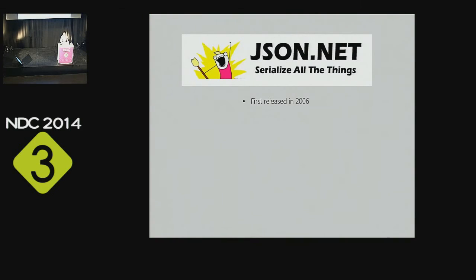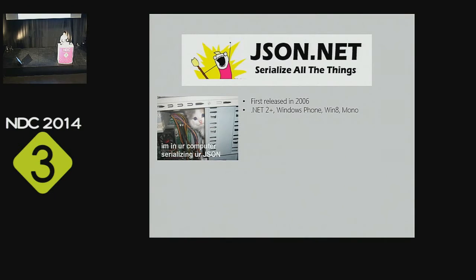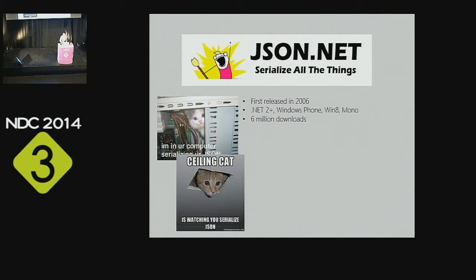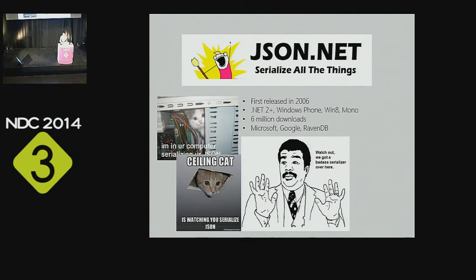JSON.NET was first released in 2006, the same year the JSON specification was written by Douglas Crockford. It works in every framework from .NET 2 and above — .NET 2, 3, 4, 4.5 — and on Windows Phone, Windows 8, Mono, MonoTouch, and MonoDroid. It's had six million downloads since 2006 and gets about a million downloads every two months. It's used by Microsoft in Web API and SignalR, by Google in their .NET client libraries, and by RavenDB as its core JSON handler.